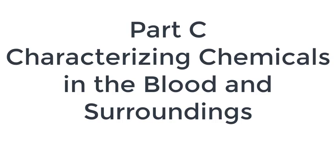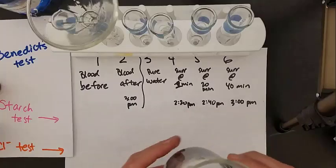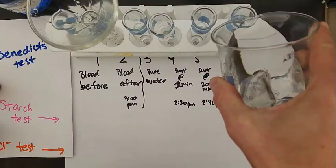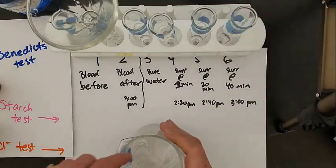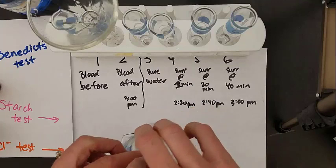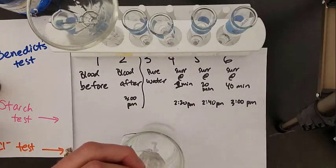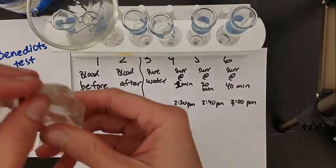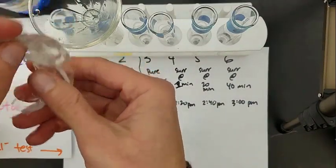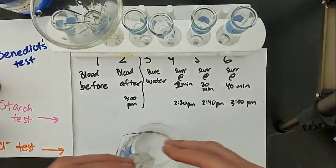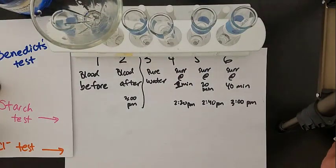Once the 40 minutes are done, we're ready to characterize the chemicals in the blood and surroundings. We'll pour the surrounding water into test tube six, that's our 40-minute surroundings. Then we'll cut open the dialysis tubing and pour that blood into test tube two, the blood after. So we have blood before in test tube one and blood after in test tube two.